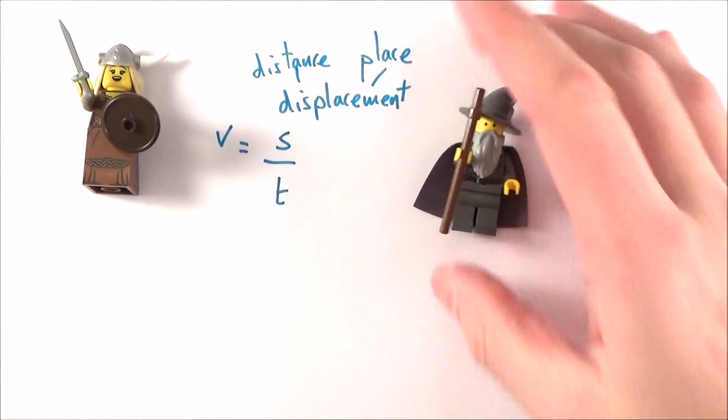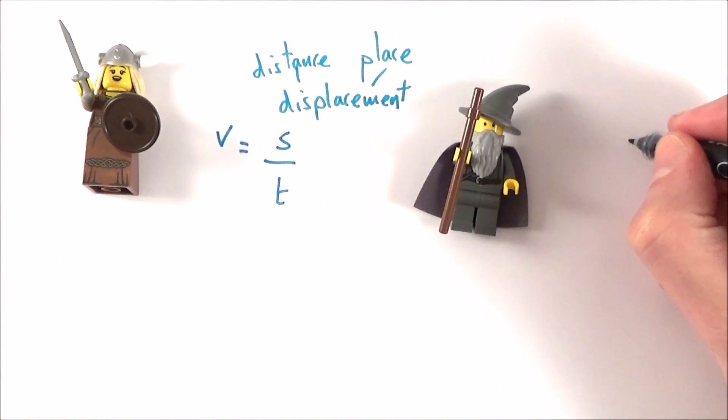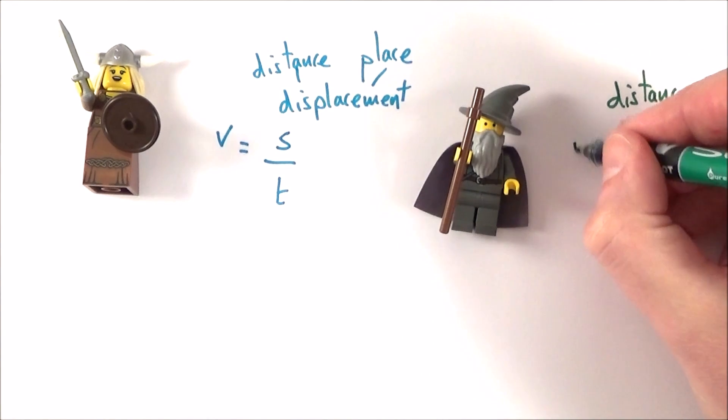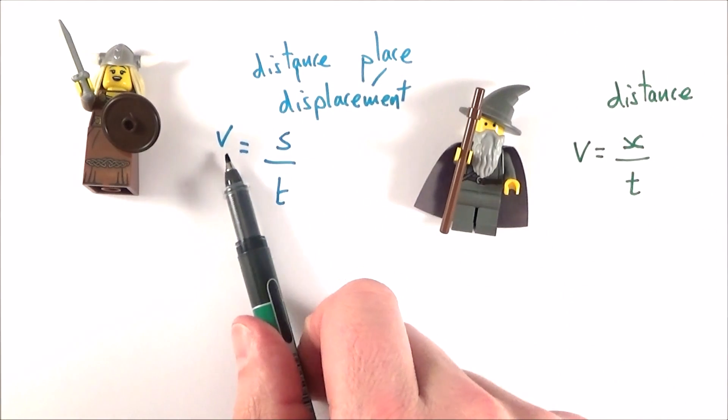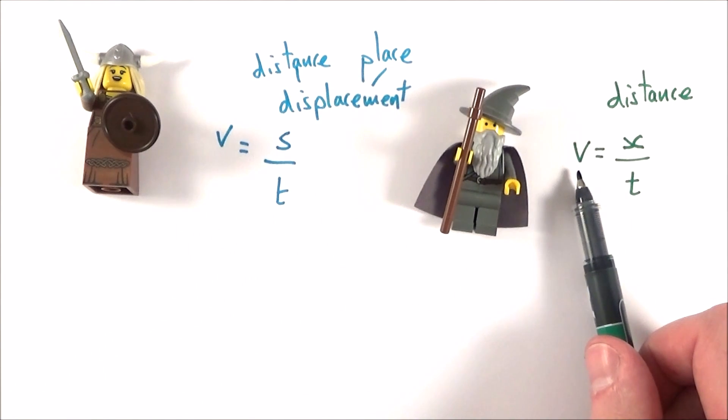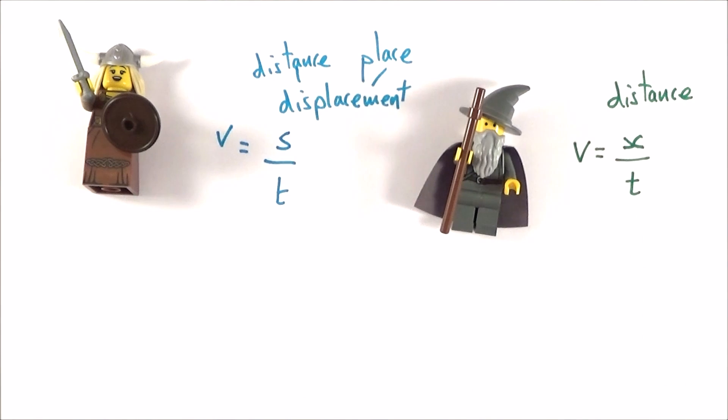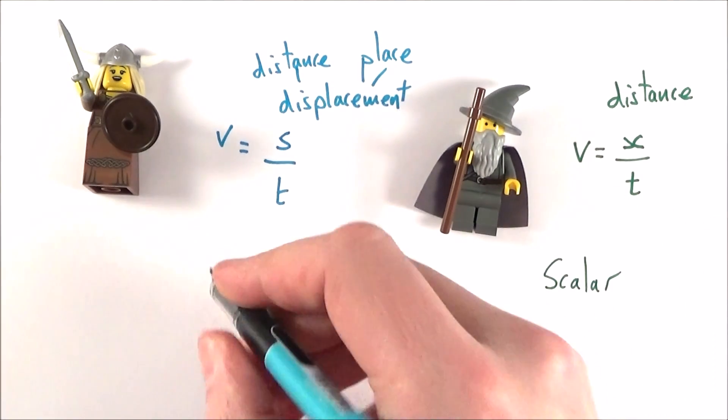Now Gandalf did something similar but this time what he did, he ended up by going a certain distance. So the distance we give the symbol x. So the distance that he actually travelled, x, we can maybe consider how quickly he moved that distance. And this gives us the speed that he travelled at. And the velocity of the Viking is going to be very different to the speed of Gandalf. And this is a good example to maybe introduce the difference between what we call a scalar quantity and something that we call a vector.